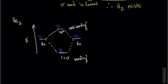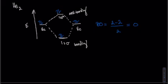So if we try to calculate the bond order using the same formula as above, we get zero. Therefore, diatomic helium does not exist.